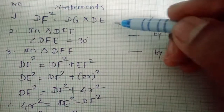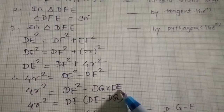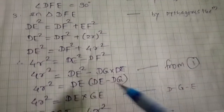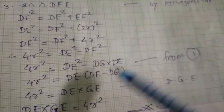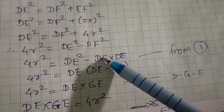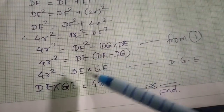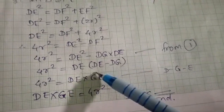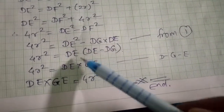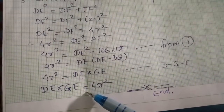Substituting DF² = DG × DE from the first statement: 4r² = DE² − DG × DE = DE(DE − DG). Since DE − DG = GE, we get 4r² = DE × GE. Hence proved.